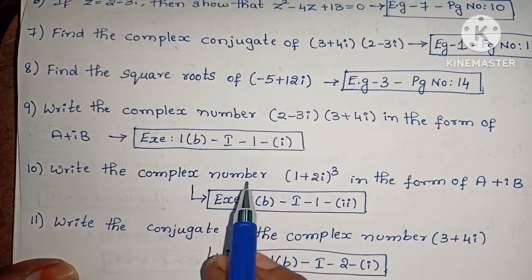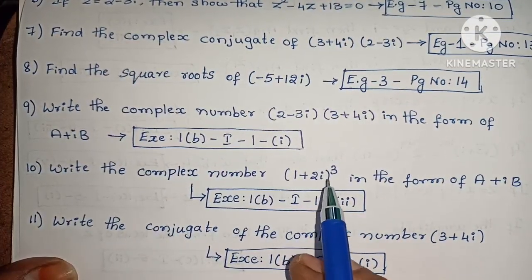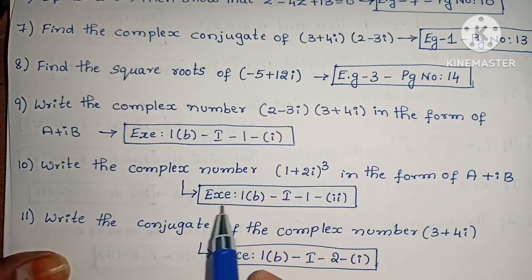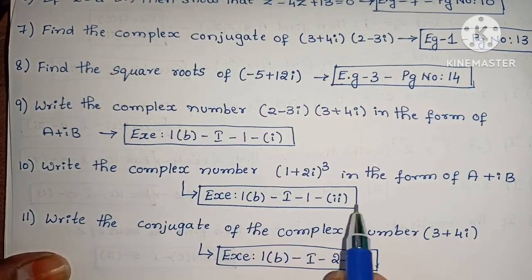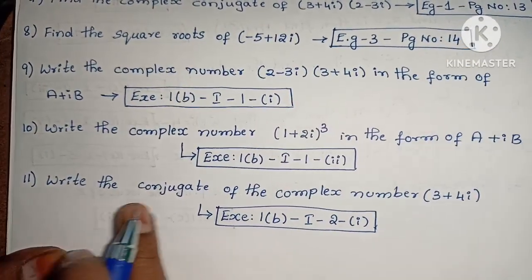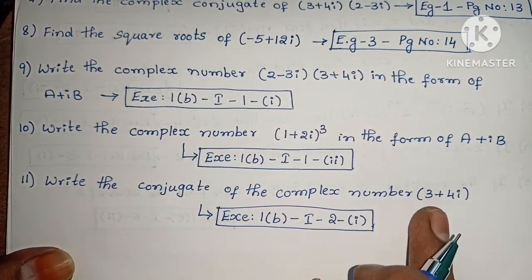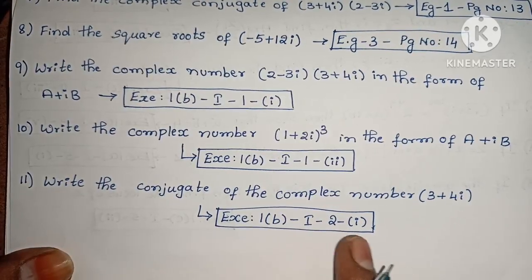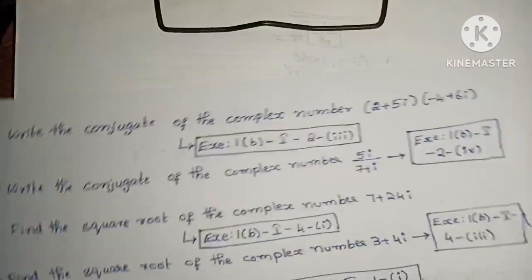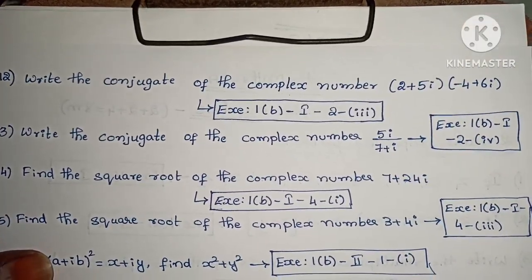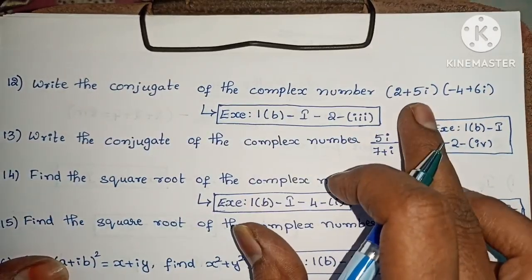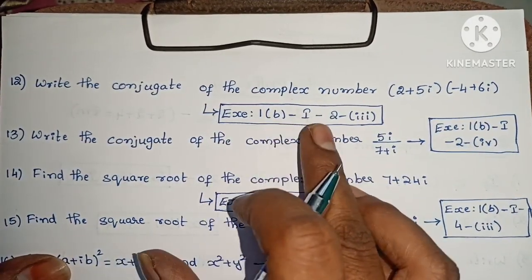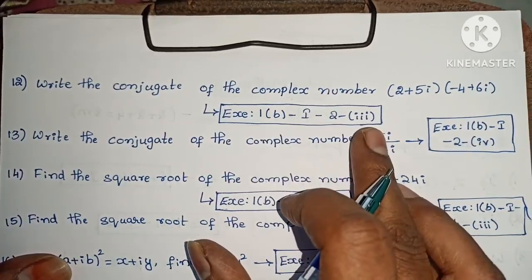Next, write the complex number (1 + 2i)³ in the form of a plus ib. Exercise 1 below, first roman, first, second one. Next, write the conjugate of the complex number (2 + 5i)(-4 + 6i). Exercise 1 below, first roman, second, third one.